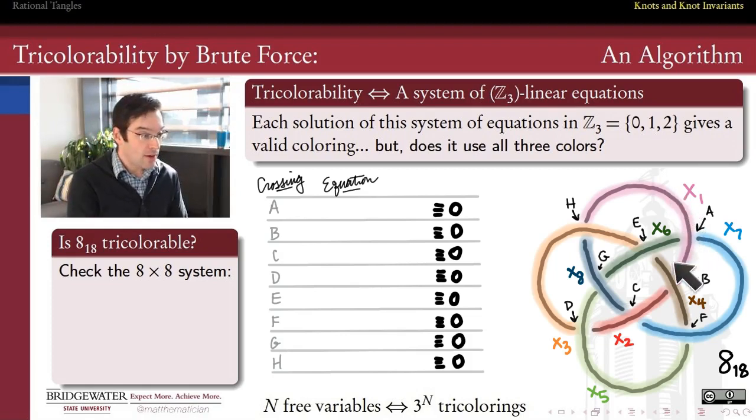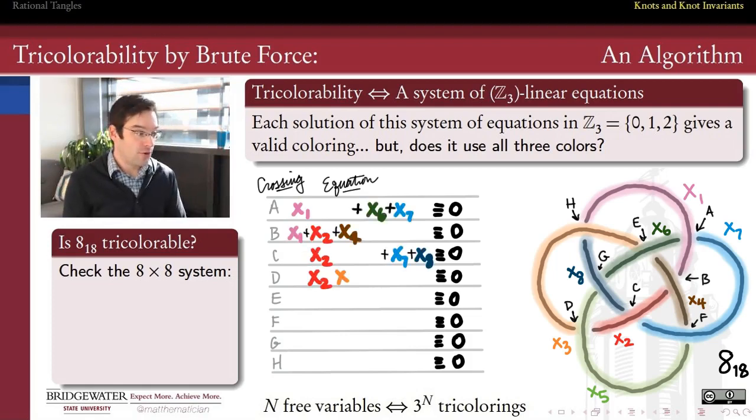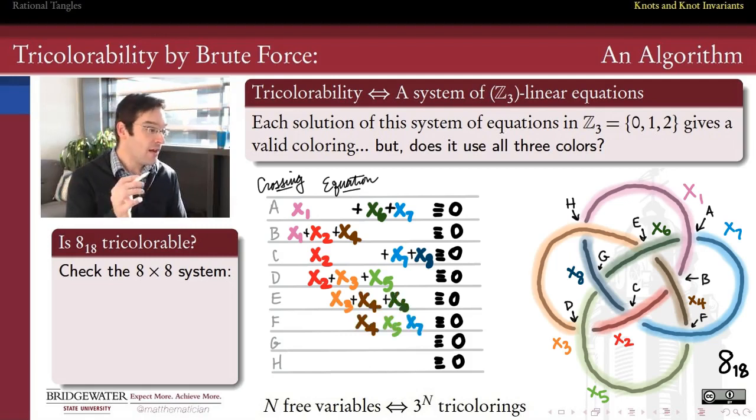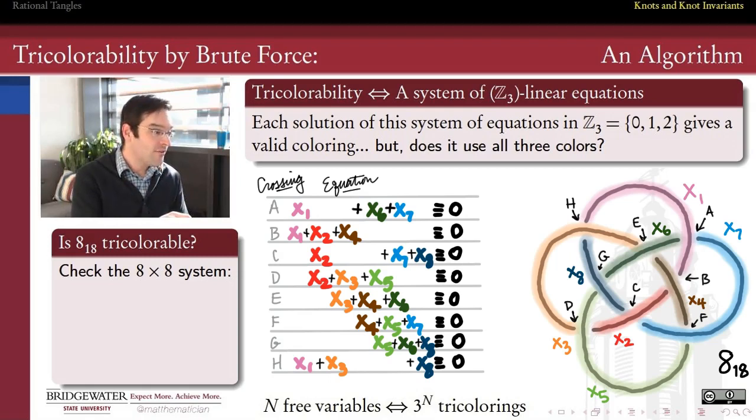For example, at crossing A, x1 is my overstrand, x6 and x7 are my understrands, and so the sum that I need to make at crossing A is x1 plus x6 plus x7. And if I do that same thing at crossing B, 1, 2, and 4; C, 2, 7, and 8; D, 2, 3, and 5; E, 3, 4, and 6; F, 4, 5, and 7; G, 5, 6, and 8; and H, 1, 3, and 8.